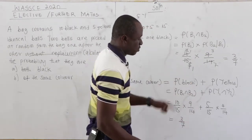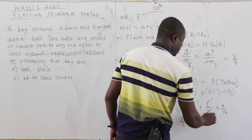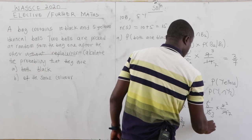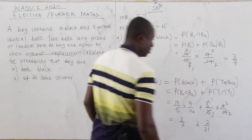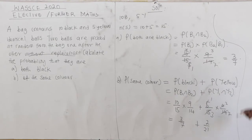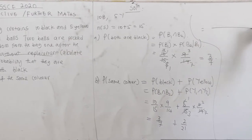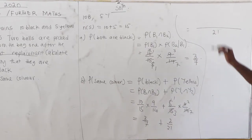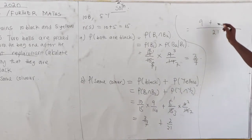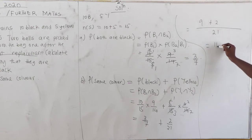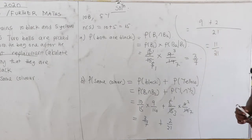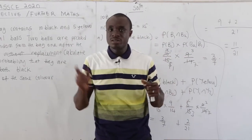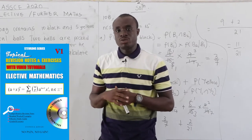So we have 3/7 plus 2/21. The LCM of 7 and 21 is 21. 7 goes into 21 three times, so 3/7 = 9/21. Then 9/21 plus 2/21 gives us 11/21. That is our final answer for the probability that the two balls are of the same color.